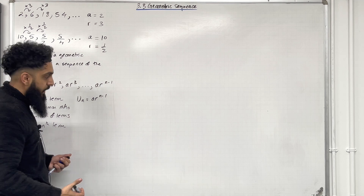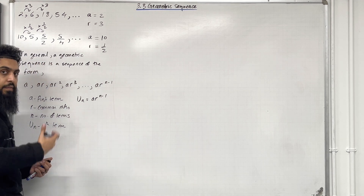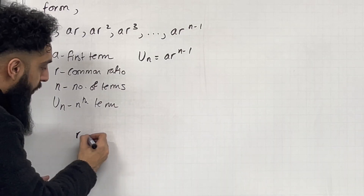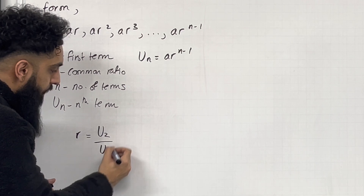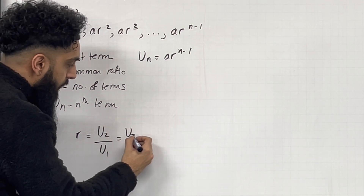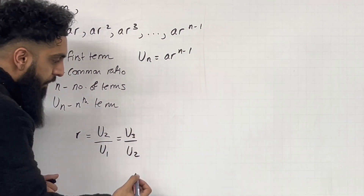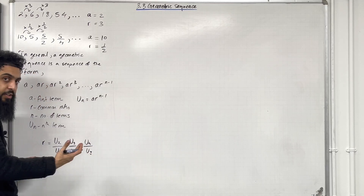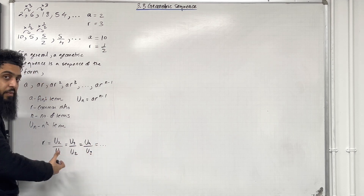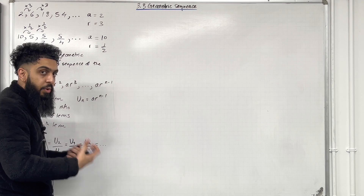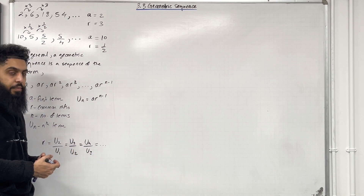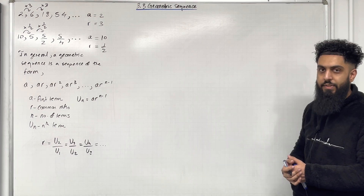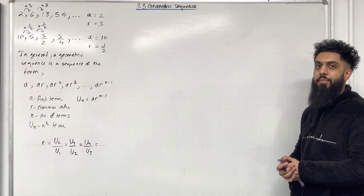For a geometric sequence, you could be tested on this key information: the common ratio R equals the second term divided by the first term, which equals the third term divided by the second term, which equals the fourth term divided by the third term, and so on. That is very important information for answering exam-style questions. These are all the key facts of 3.3 geometric sequences — now I'm going to implement these facts in exam-style questions.